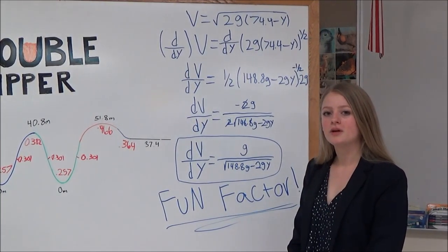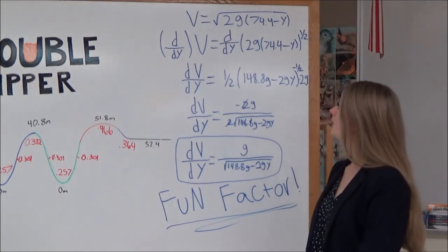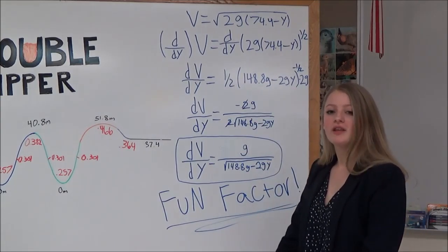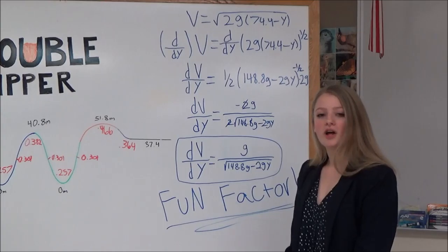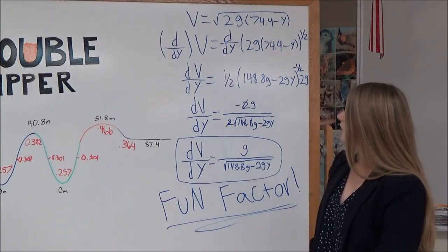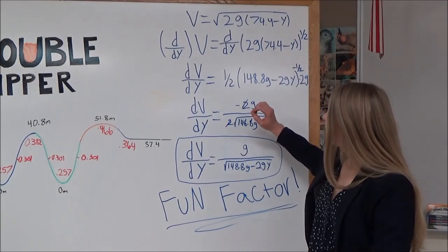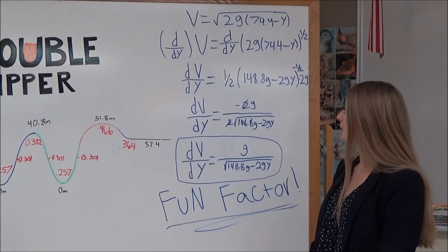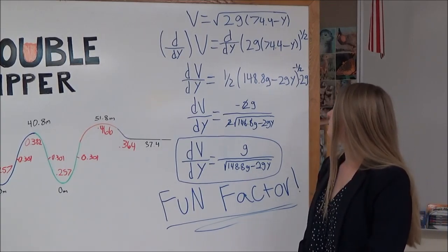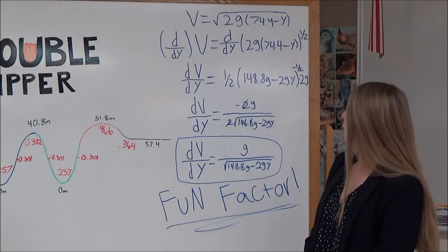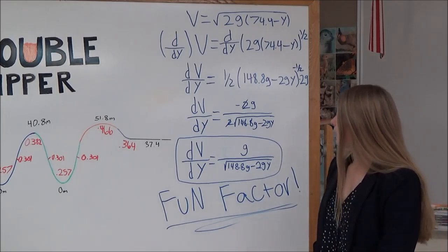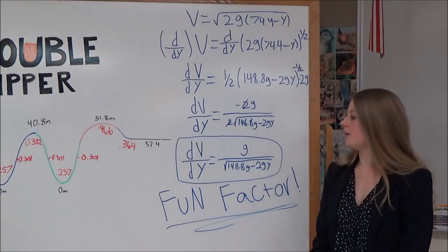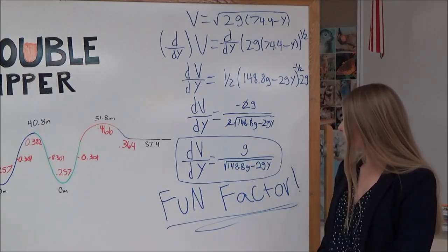Now, I'm going to walk you through the calculation of the fun factor. So, as we discussed earlier, this is the equation for velocity. So, we found out that the fun factor is the change in velocity over the change in height. So, we had to apply the operator. And then, we found the derivative. And we found that that was equal to 1.5 times 148.8g minus 2gy to the 1.5 power times 2g. And through some simple algebra, we could cancel out the twos and got a final answer of g over the square root of 148.8g.